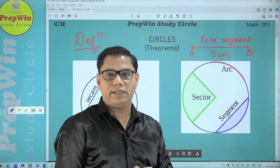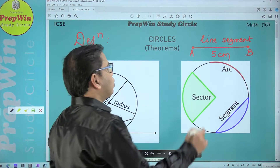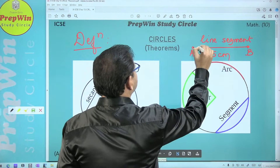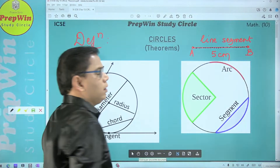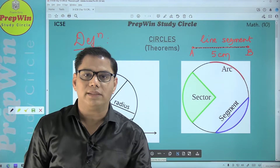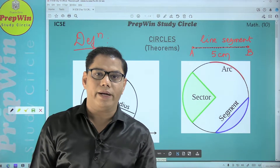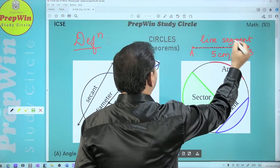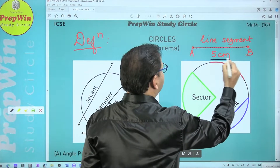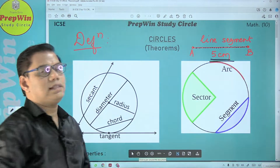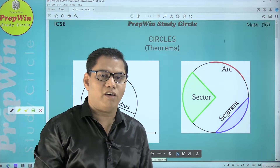Why am I talking about a line segment? If I ask you what is the definition of a line segment — the definition of a line segment is that it is a set of infinite number of points. You can take it as small as possible, maybe one centimeter or even half a centimeter — it is also a set of infinite points. Infinite points come together to form a line segment. A line segment has some length, as in this case of five centimeters.